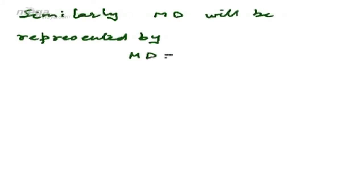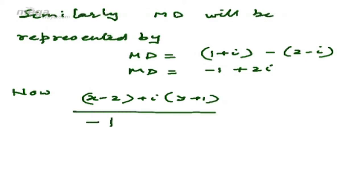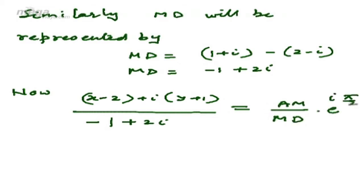Similarly, MD is represented by (1+i) - (2-i) = -1 + 2i. Now, the final position AM divided by the initial position MD equals the length ratio AM/MD multiplied by e^(iπ/2), because π/2 is the angle through which we rotate the MD line in the direction of AM.